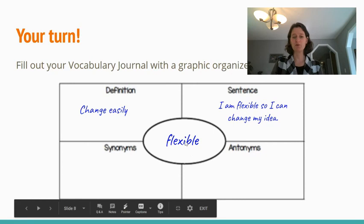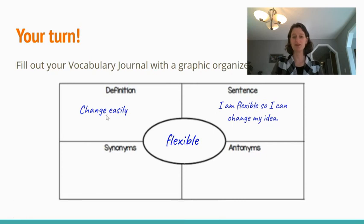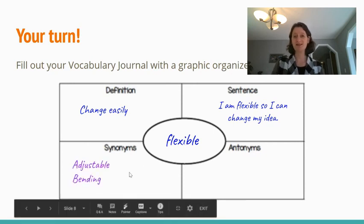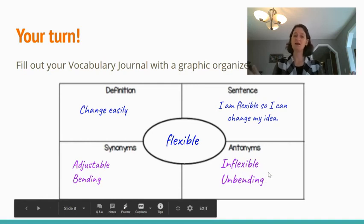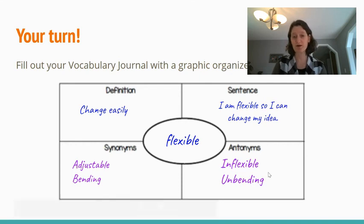So here for an example, the word flexible, we have the definition and the sentence. Today you're going to add synonyms like adjustable or bending, and you're going to add antonyms, inflexible and unbending. And any other synonyms or antonyms that you can think of or that you can come up with.